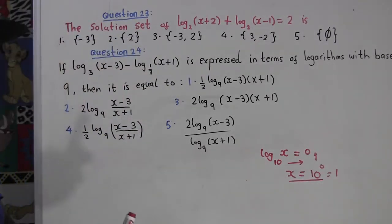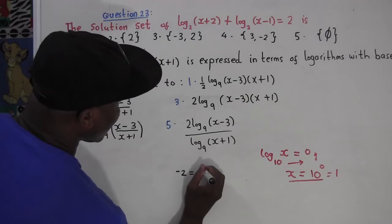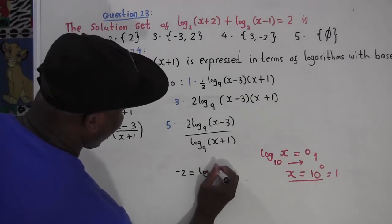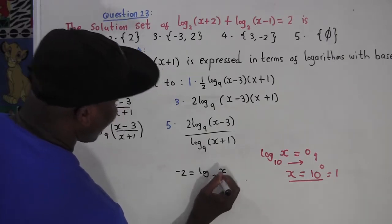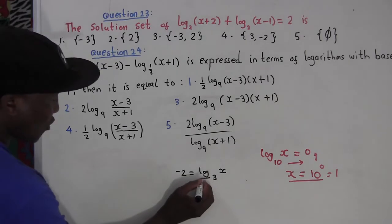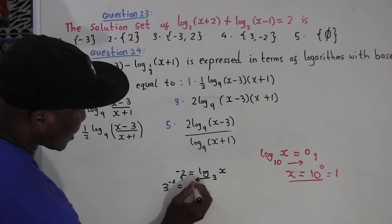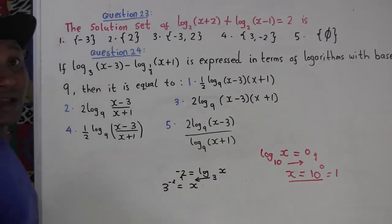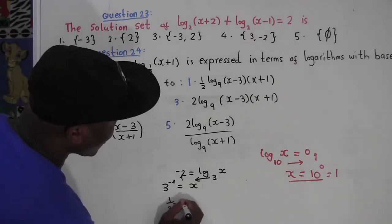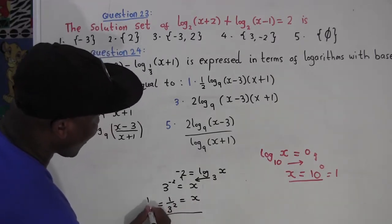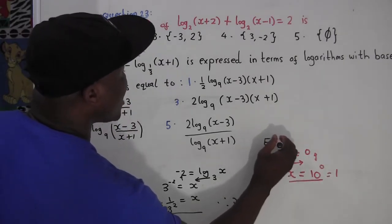That's how you apply the exponential rule. For example, if somebody gives you negative 2 equals log base 3 of x, find the value of x. You push the base 3 to the other side — it becomes 3 to the power negative 2 equals x. A negative power means you write it as 1 over 9, so x equals 1 over 9. This rule is called the exponential rule.